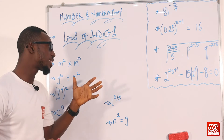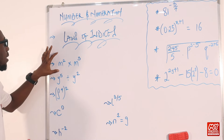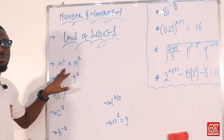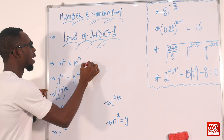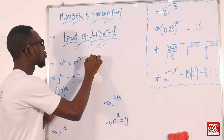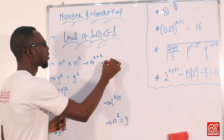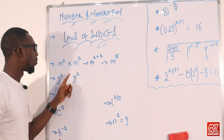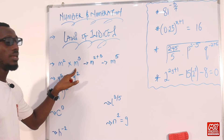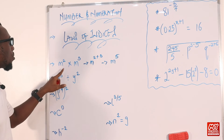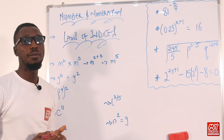Let's start with each of the laws that we have here. So you can see the first law: M raised to power 2 times M raised to power 3. This tells you that M raised to power 2 plus 3, and that equals M raised to power 5. That means the times we have here — you can see that the bases are the same — so the times become plus, and that is M raised to power 5.